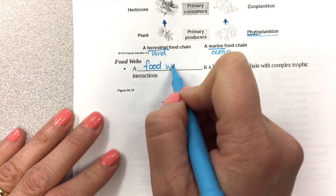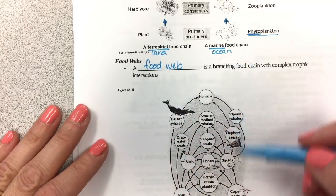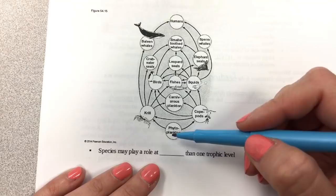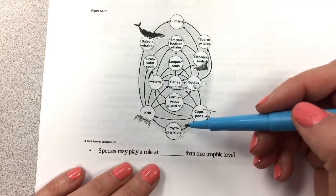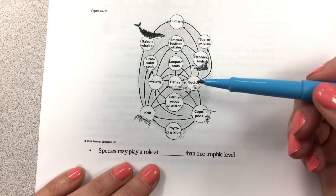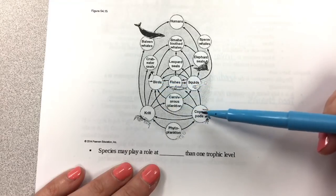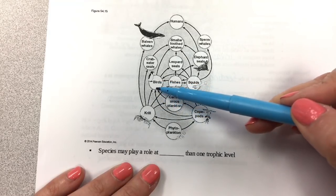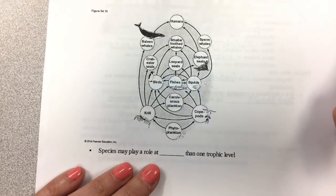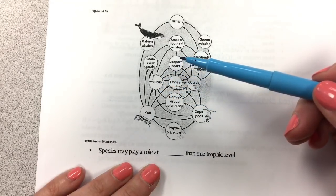A food web is a branching food chain with complex trophic interactions. Many food chains make up one food web. Organisms can get their energy from multiple sources. For example, a penguin here can eat krill, copepods, carnivorous plankton, fishes, or squids — and therefore can occupy different trophic levels depending on what it's feeding on.